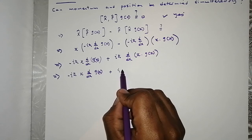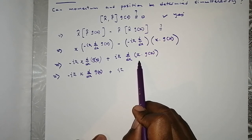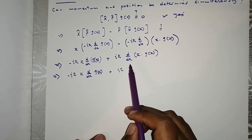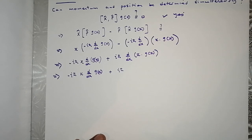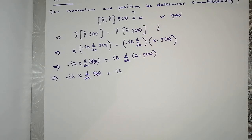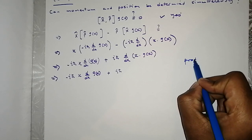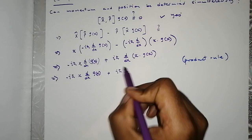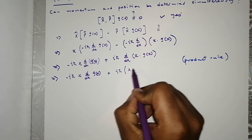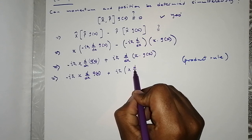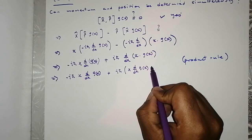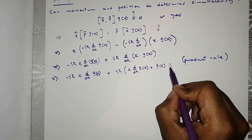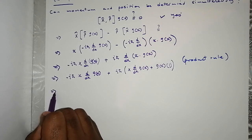Looking at this term, we have differentiation with respect to x being applied to x multiplied by g(x), so we need to use the product rule. The product rule gives us x times d/dx of g(x) plus g(x) times the derivative of x, where the derivative of x is just 1.